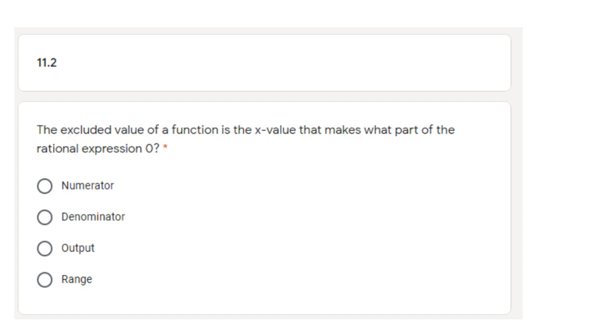Next section, 11.2 with some vocab. The first one was about the excluded value of a rational expression. A rational expression, here's an example of one: 1 over x minus 3.